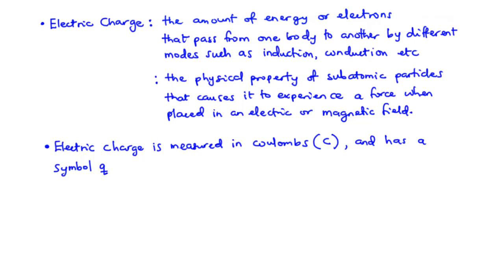An electric charge is said to be the most basic quantity in an electric circuit. It can simply be defined as the amount of energy or electrons that pass from one body to another by different modes such as induction, conduction, or by any specified method. An electric charge is measured in coulombs and has the symbol Q.